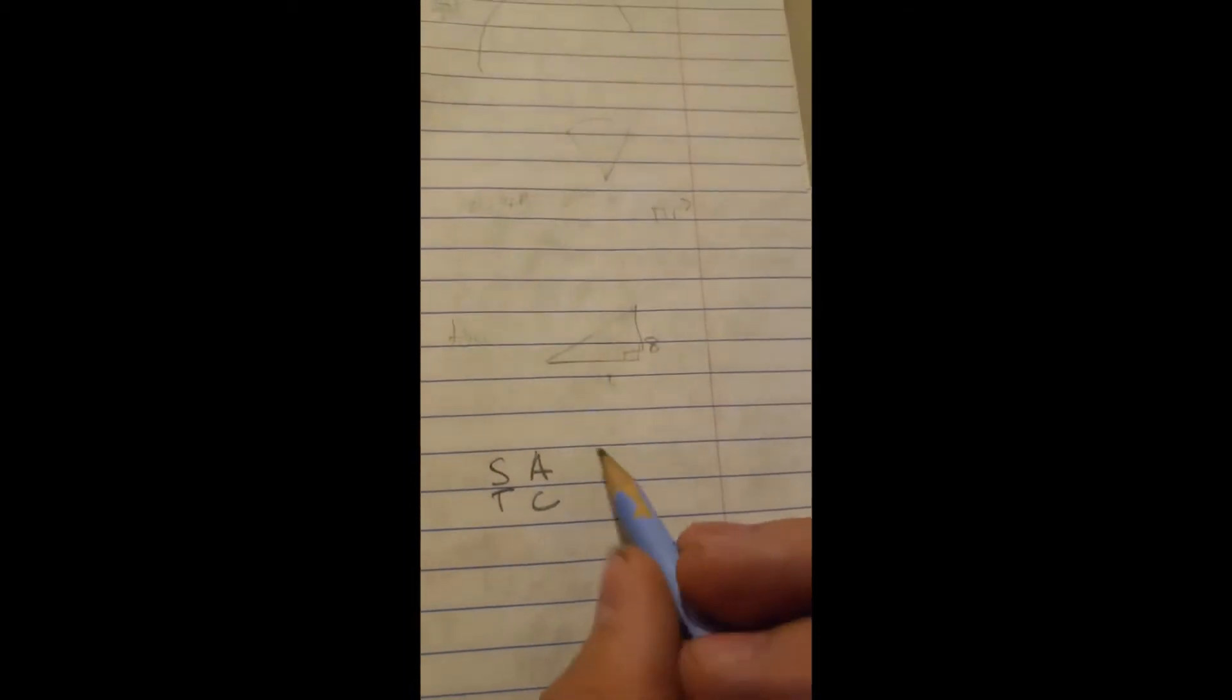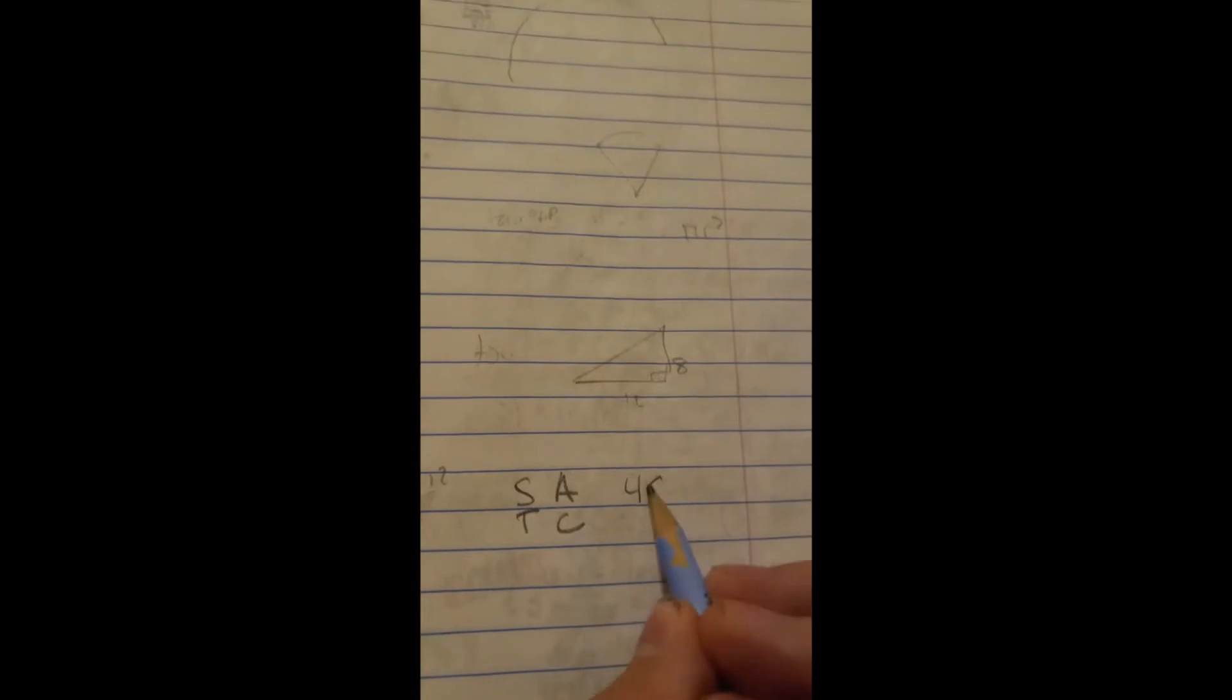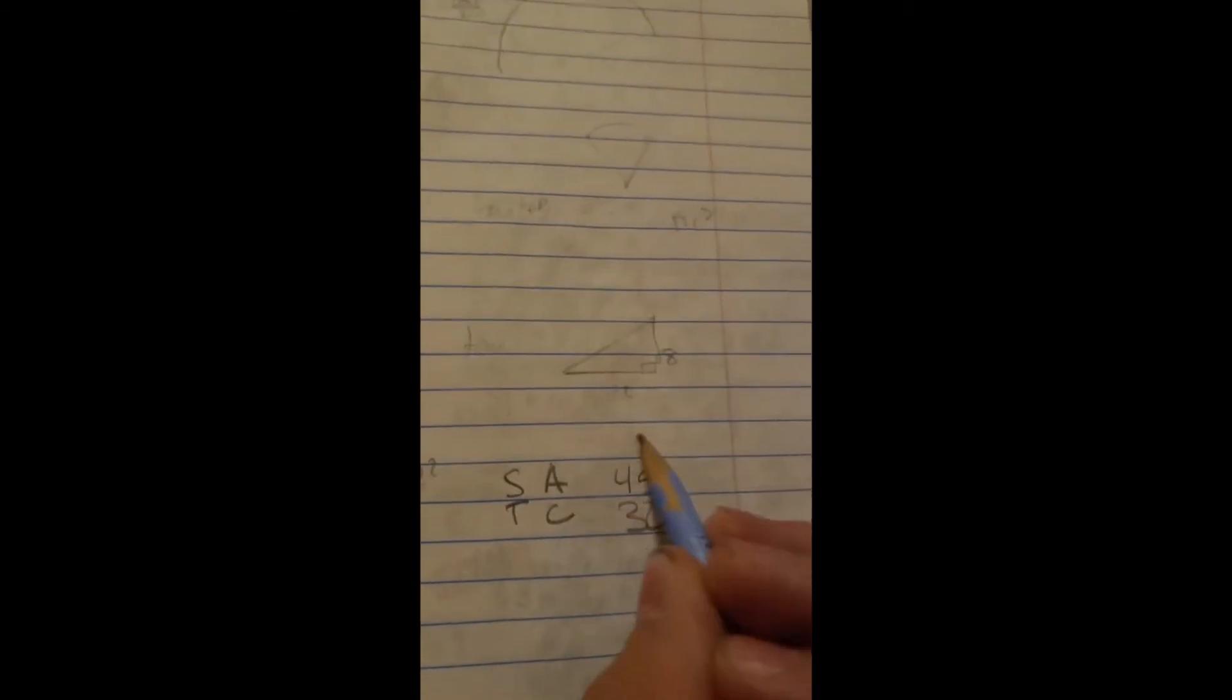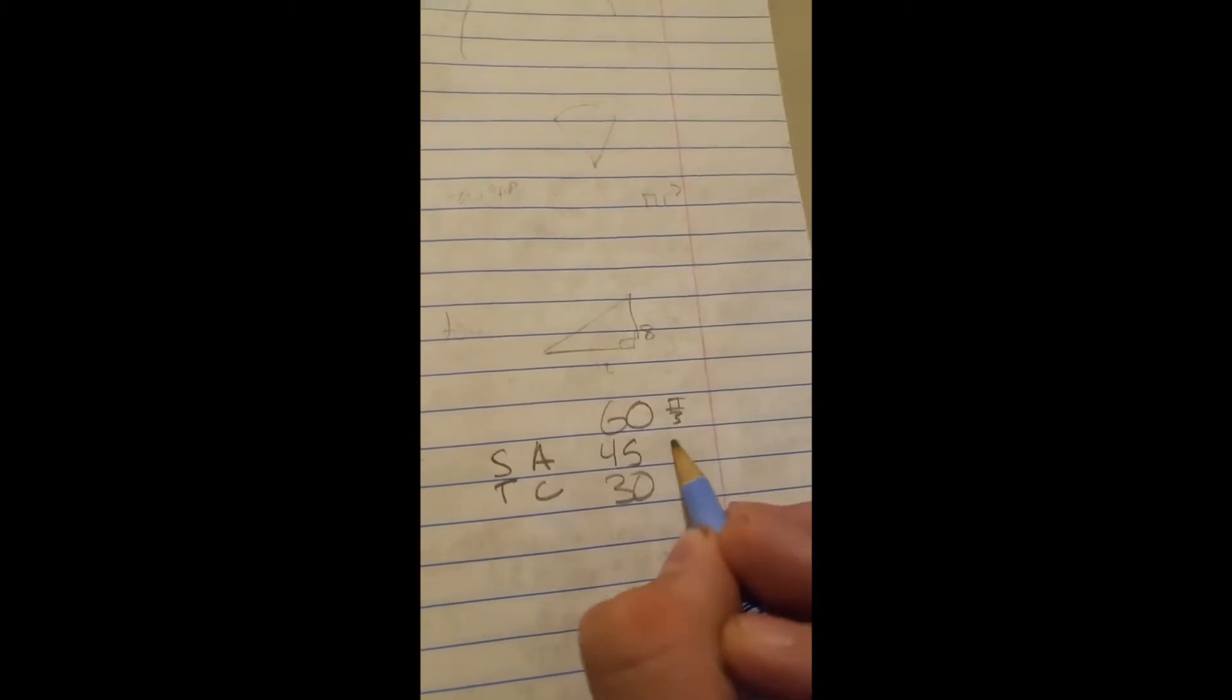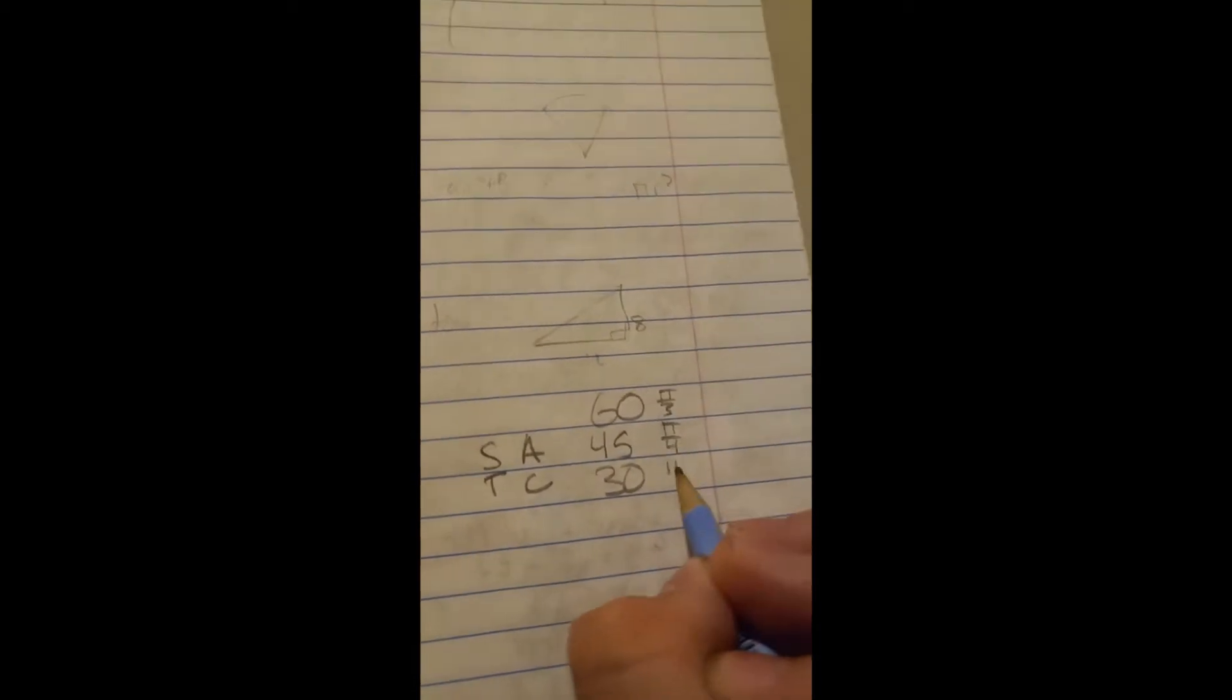It's helpful to know the reference angles for 45, 30, and 60 degrees, or pi over 3, pi over 4, and pi over 6 in radians.